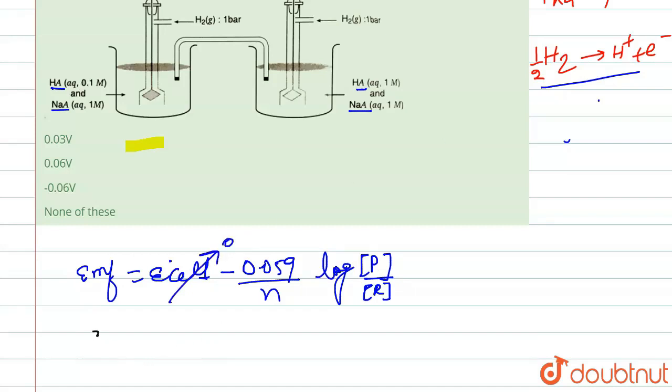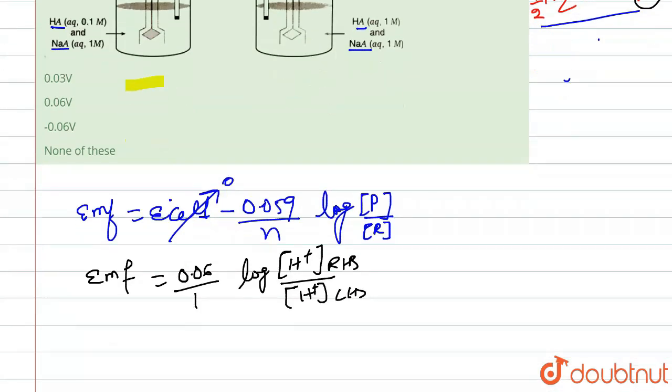So what's left is now our EMF. EMF equals to 0.06 upon 1, the value of n is from here, the electron. And the log of H+, because in product and in reactant both sides we are having H+. So H+ of RHS upon H+ of LHS.